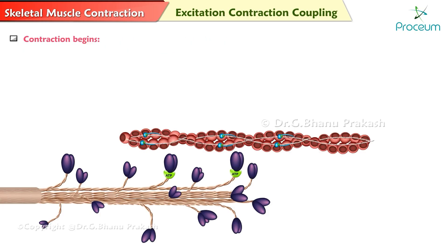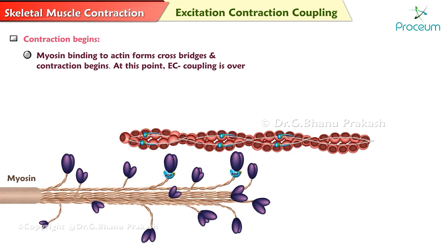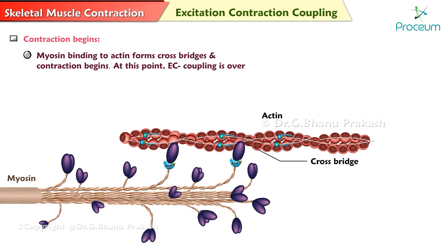Contraction begins. Myosin binding to actin forms cross-bridges and contraction begins. At this point, the excitation-contraction coupling is over.